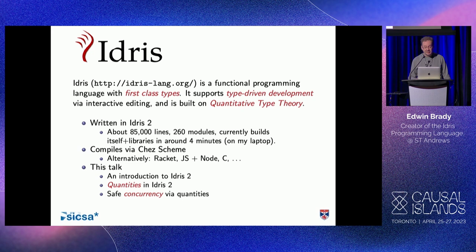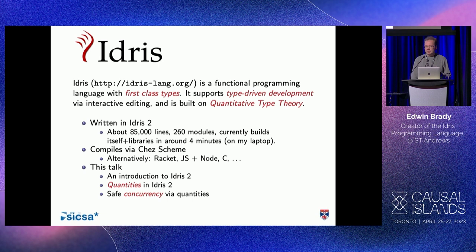The key thing about dependent types - just to keep in mind throughout - is that types are first class in the language. If you've done functional programming, you'll know that functions are first class: you can assign them to variables, return them from functions, pass them to functions. So if your language has first-class types, then you can assign types to variables, pass them to functions, return them from functions. You can compute with types, and there's no longer a syntactic distinction between types and values. We're going to see throughout this talk how that changes the way we think about programs.